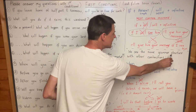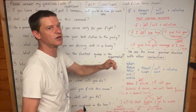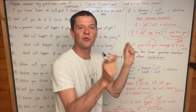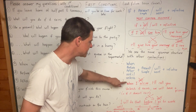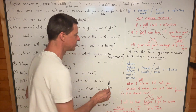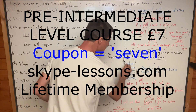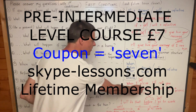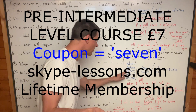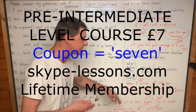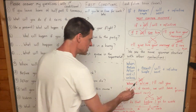We see the same grammar structure with other conjunctions. If is a conjunction — it joins clauses together. When, before, after, until, unless — they are all conjunctions. And with all of these, we use present simple. So 'when I will' is wrong, 'before I will' is wrong, 'after I will' is wrong, 'until I will' is wrong, 'unless I will' is wrong.